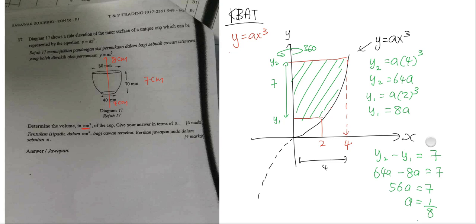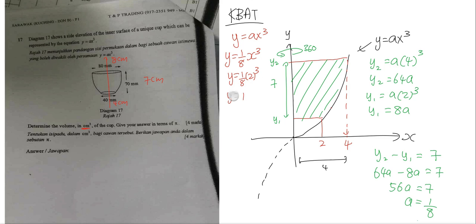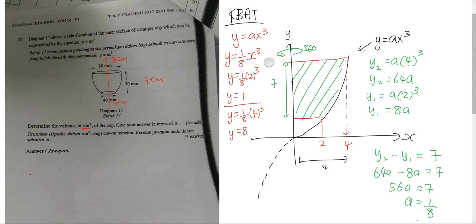You can use a different simultaneous equation method to solve this. After I get A = 1/8, I will rewrite my equation as y = (1/8)x power of 3. Then the first thing is finding my y1 and y2. If x = 2, y = (1/8)(2³) = 1. If x = 4, y = (1/8)(4³) = 8. So my limits are from 1 to 8.